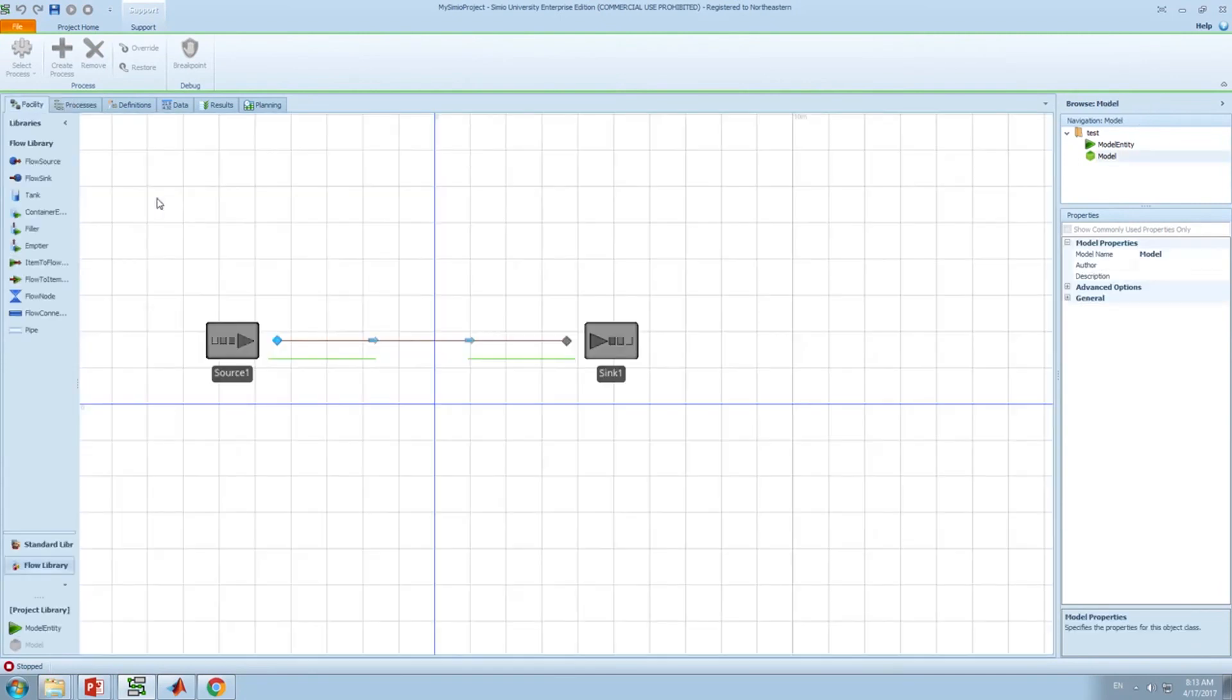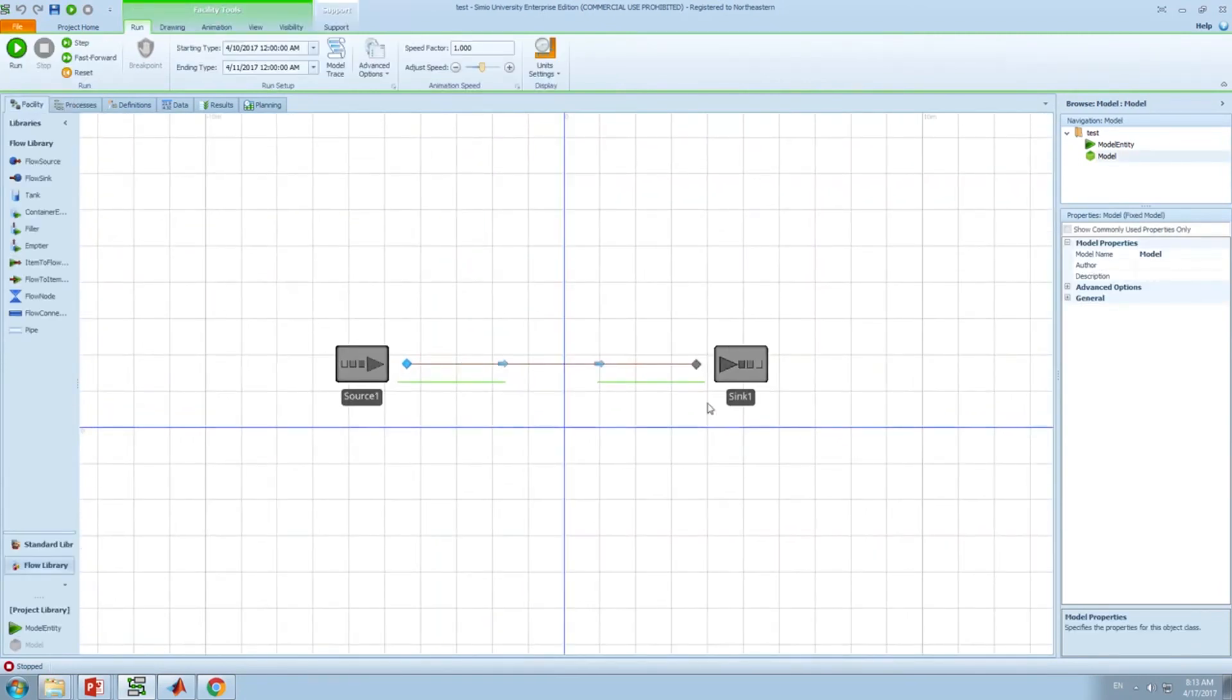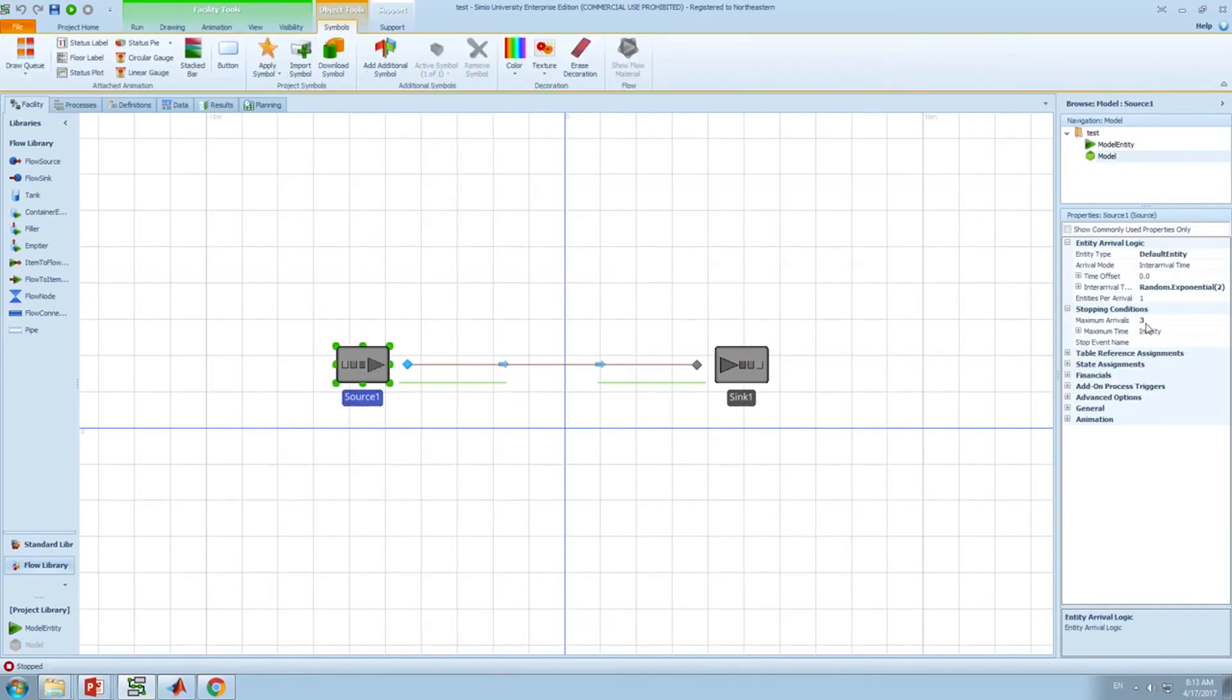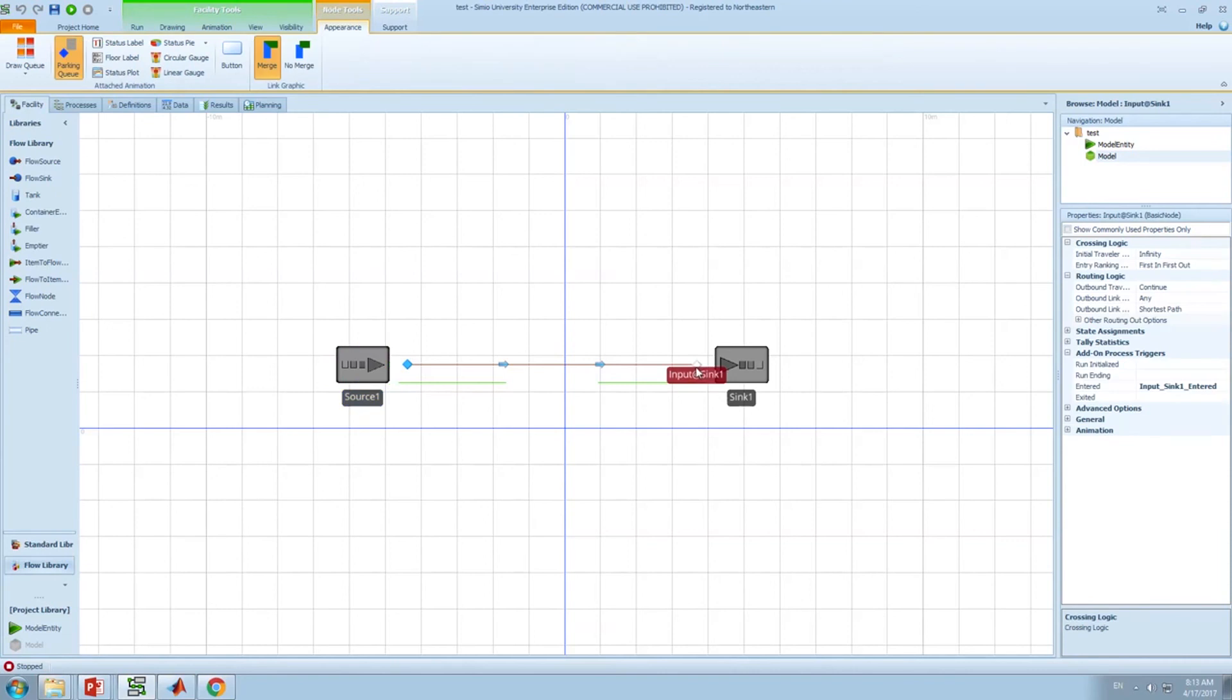Please open the test file. And as you can see, in this simulation model, I have one server and one sync. So, it is very simple, but I just want to show you how we can call MATLAB in this model. In here, I just created three entities and they arrive in the system. And once they reach this node, called input at sync1 node, I need MATLAB to be triggered.